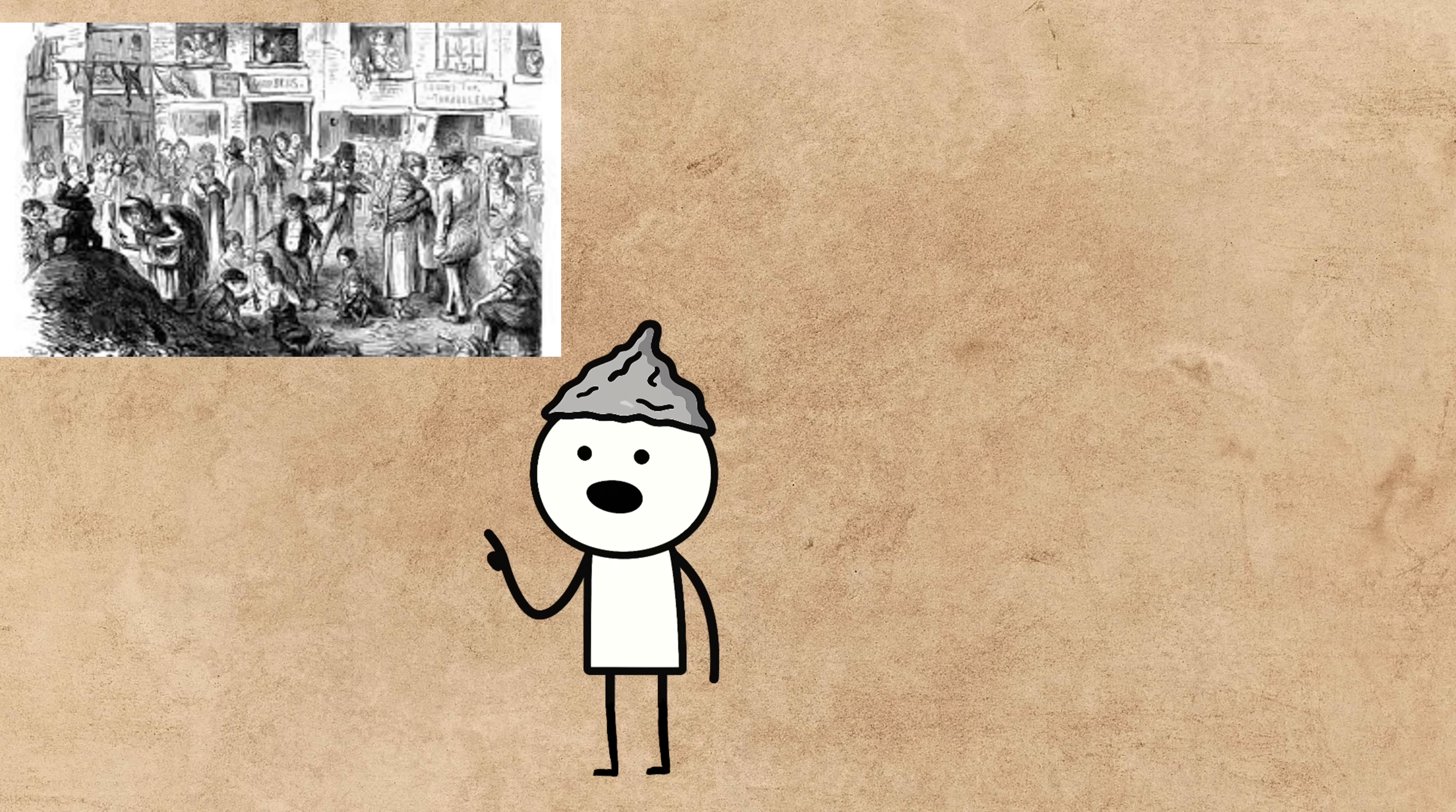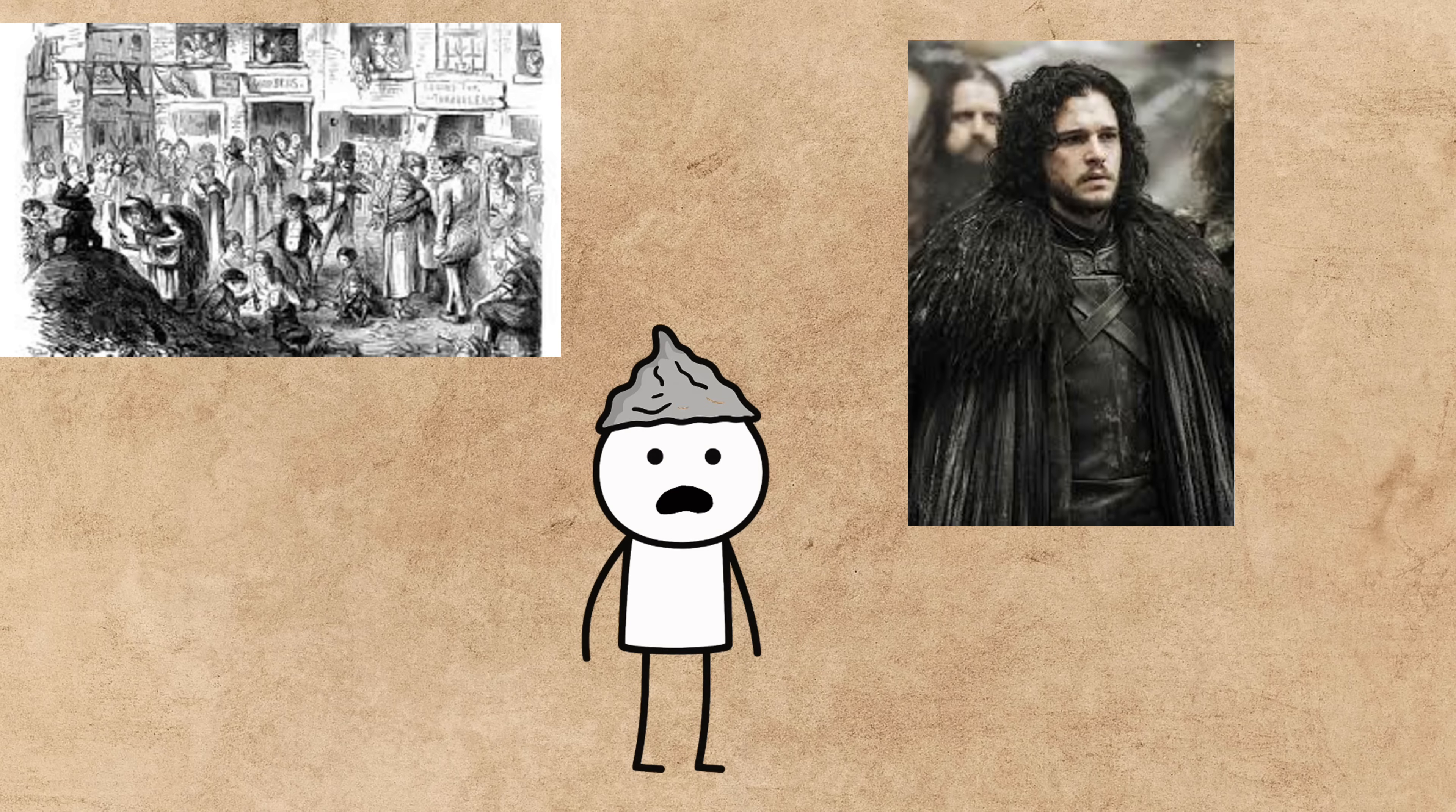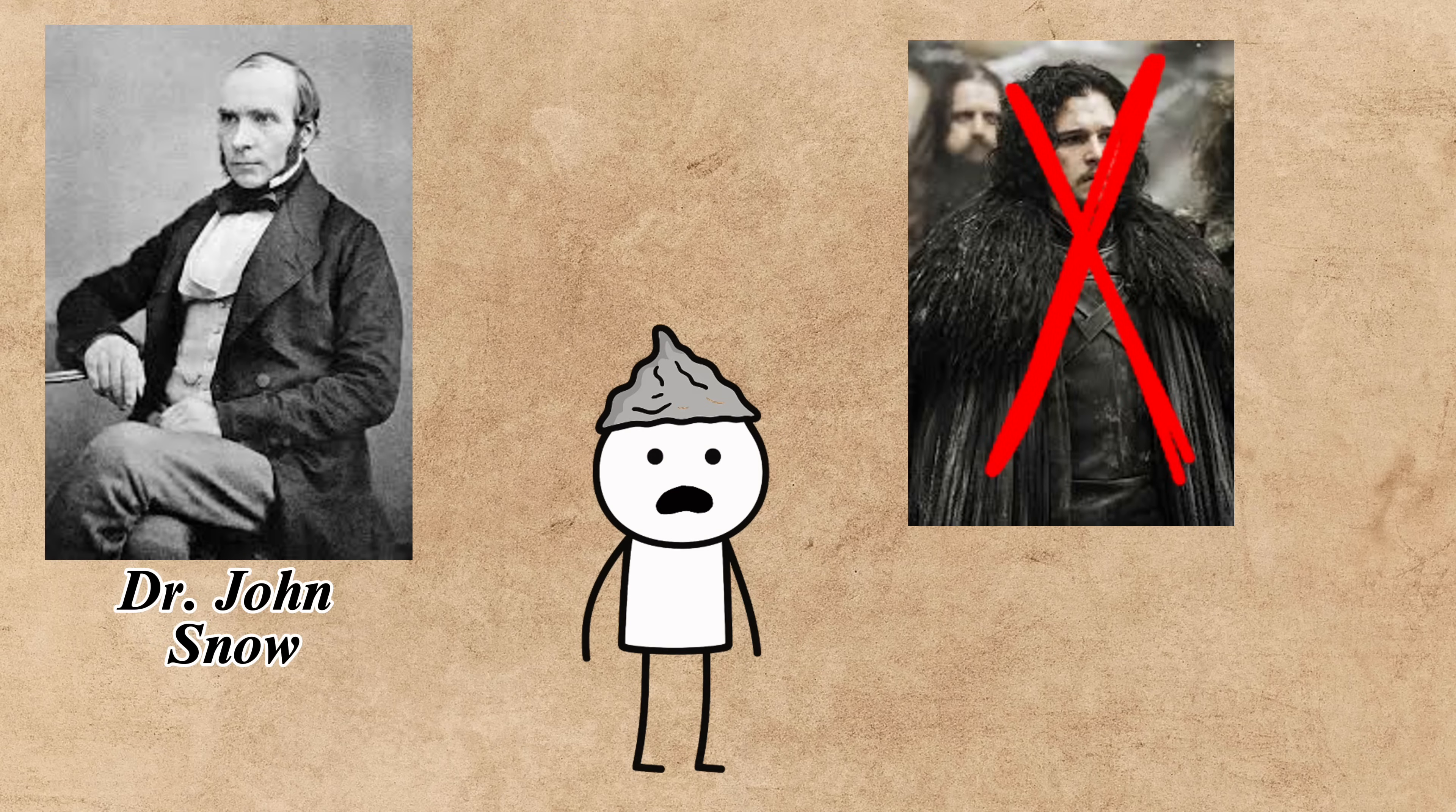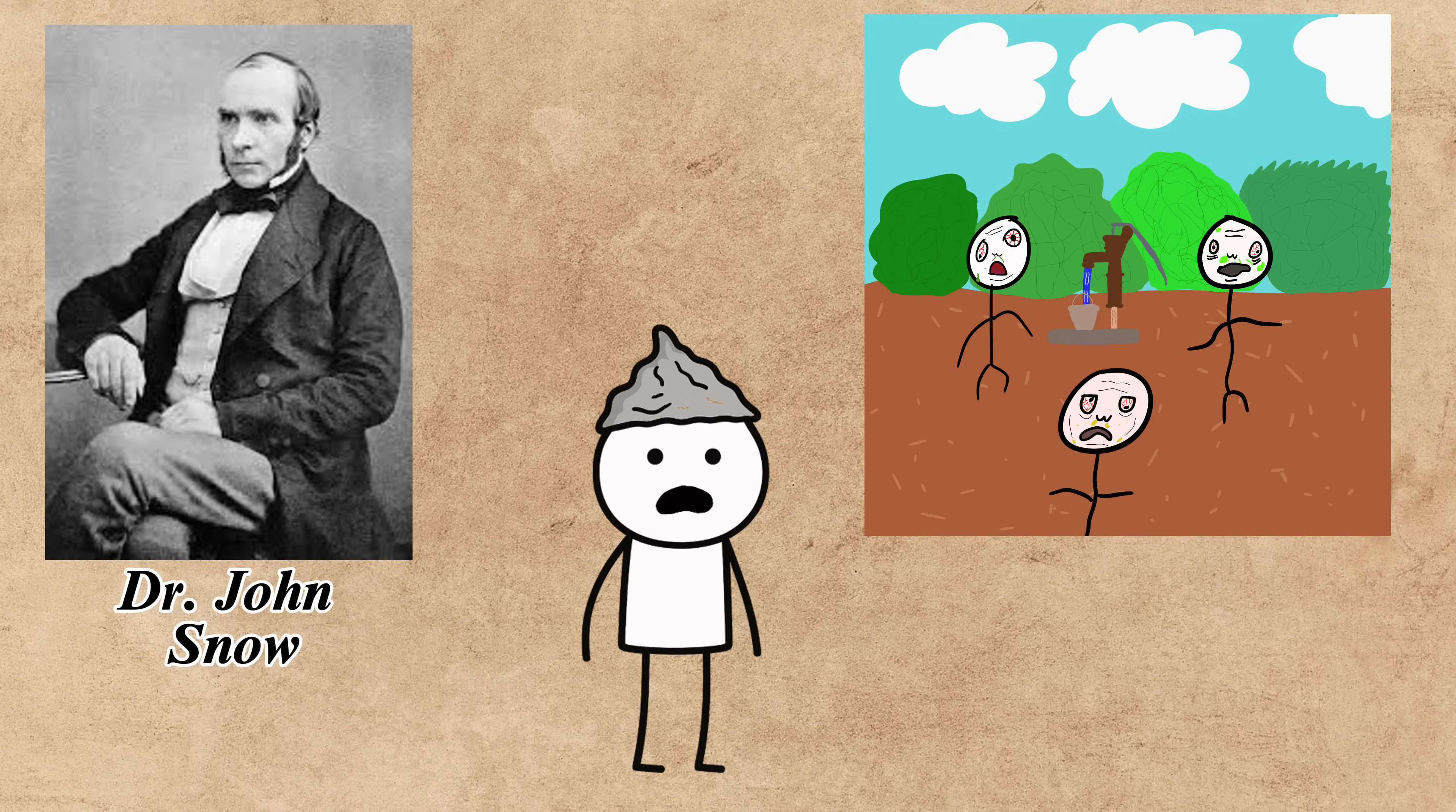The theory started to fall apart during the London cholera outbreaks of the 1850s. A doctor named John Snow, wait, no, not that one, was deeply skeptical of the miasma theory. He did something revolutionary. He mapped the cholera cases and discovered they were all clustered around a single public water pump on Broad Street. He argued the disease was spreading through contaminated water, not bad air. To prove it, he famously convinced the local council to remove the handle from the pump, and the outbreak in that area ground to a halt.